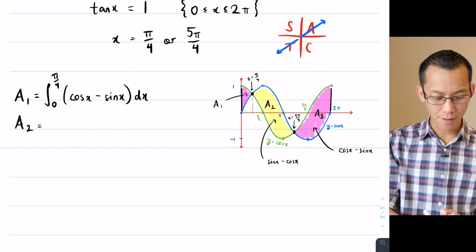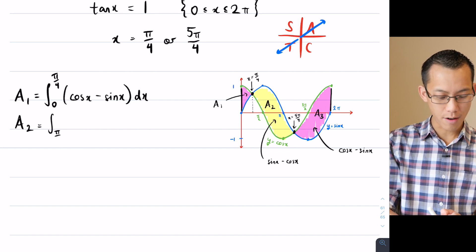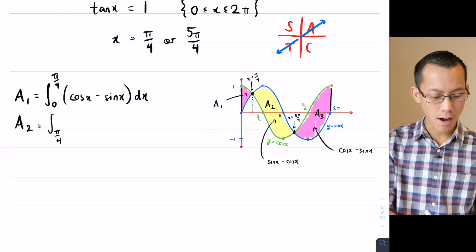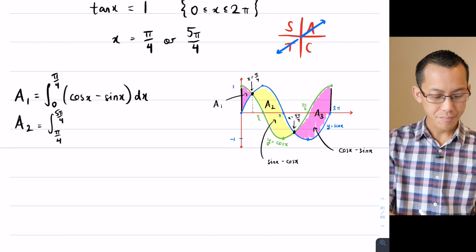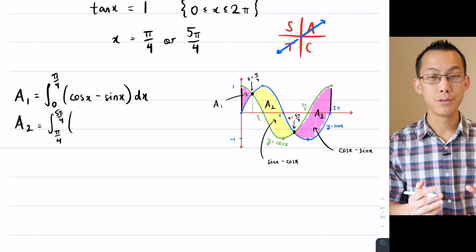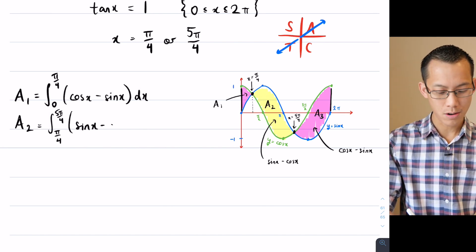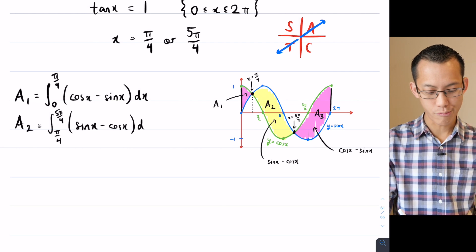A₂, the next one over, takes over at π on 4, goes all the way to the second point of intersection, which we said was 5π on 4. And this time I'm doing blue take away green, so this is sine x take away cos x with respect to x.